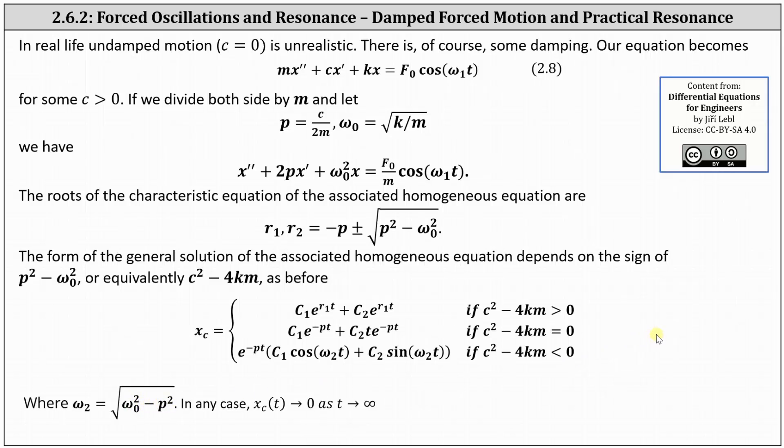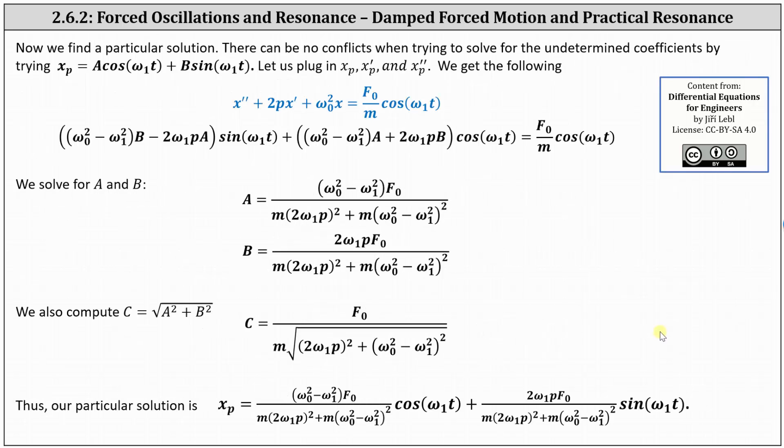The next step is to determine a particular solution, X sub P. There can be no conflicts when trying to solve for the undetermined coefficients by trying X sub P equals A cosine of omega one T plus B times sine of omega one T.